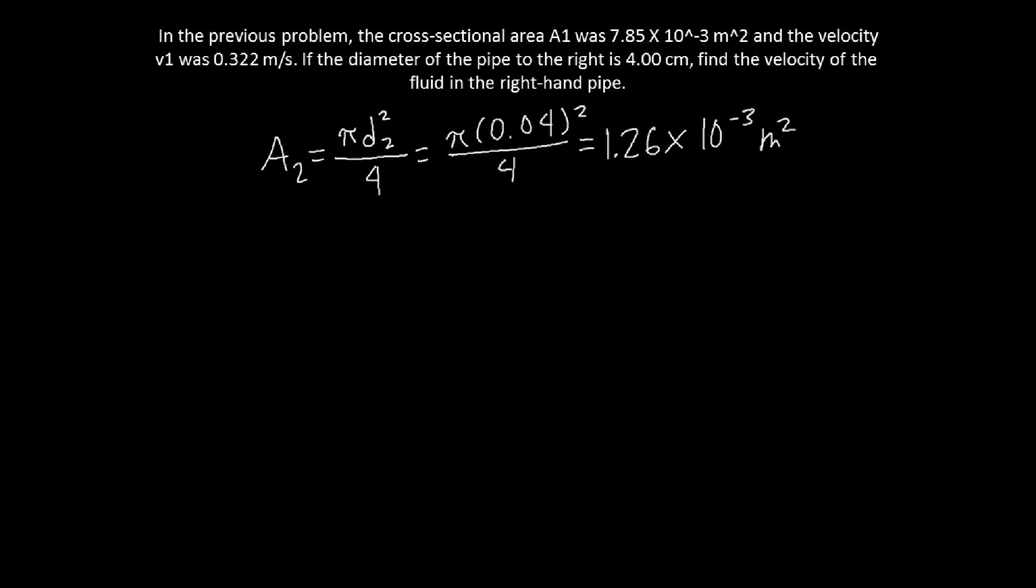Here, the velocity of the fluid on the right-hand side, we're going to solve for v₂ now, can be found by manipulating our equation of continuity. When we manipulated the formula for our equation of continuity, we'll have the following equation: v₂ = (A₁/A₂) × v₁. We will have the value of A₁ is 7.85 × 10⁻³ meters squared over 1.26 × 10⁻³ square meters. And then the v₁ given in the problem is 0.322 meters per second.